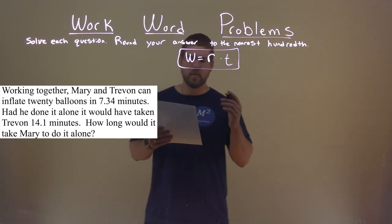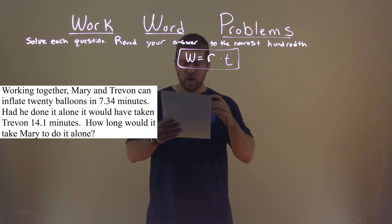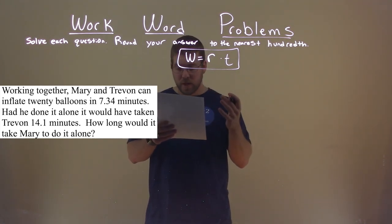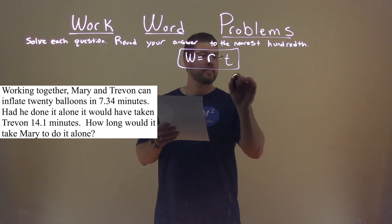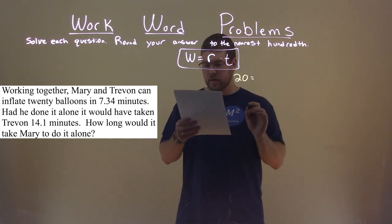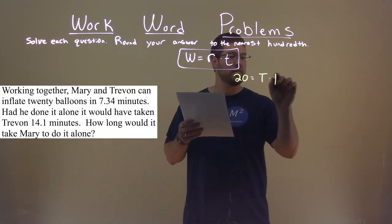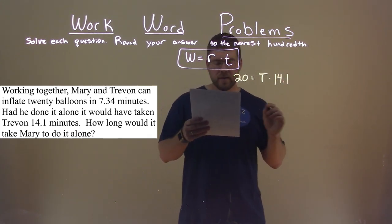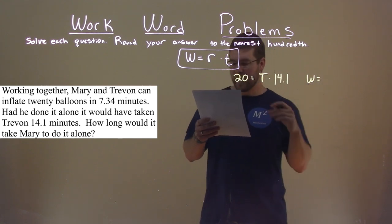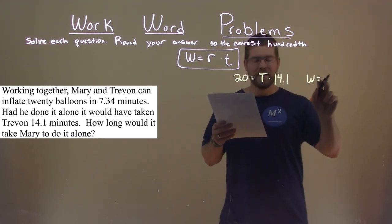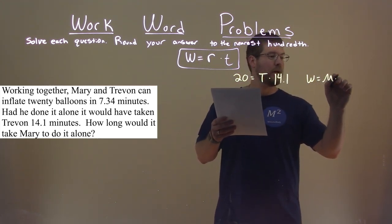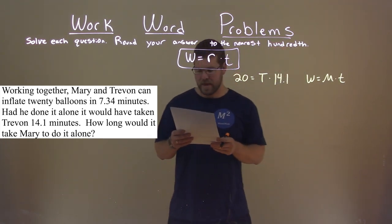Okay, so let's write down what we know. We know the work of inflating 20 balloons is equal to Trayvon's rate times 14.1 minutes. They tell us that Mary had done it alone, well that's what we want to find, so the work is equal to Mary's rate times time. So we don't really know that information there.